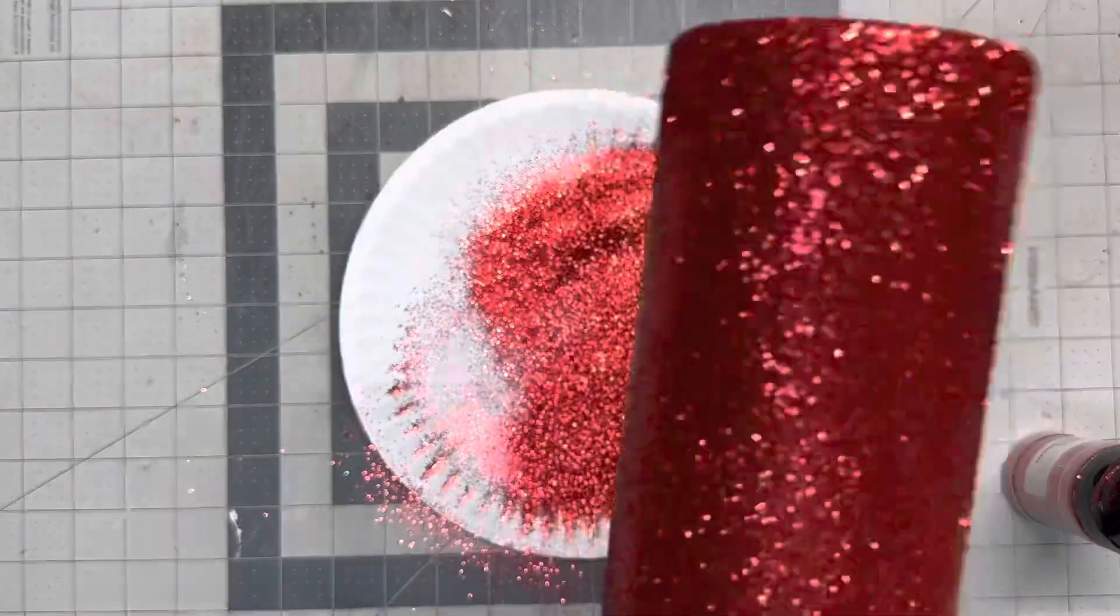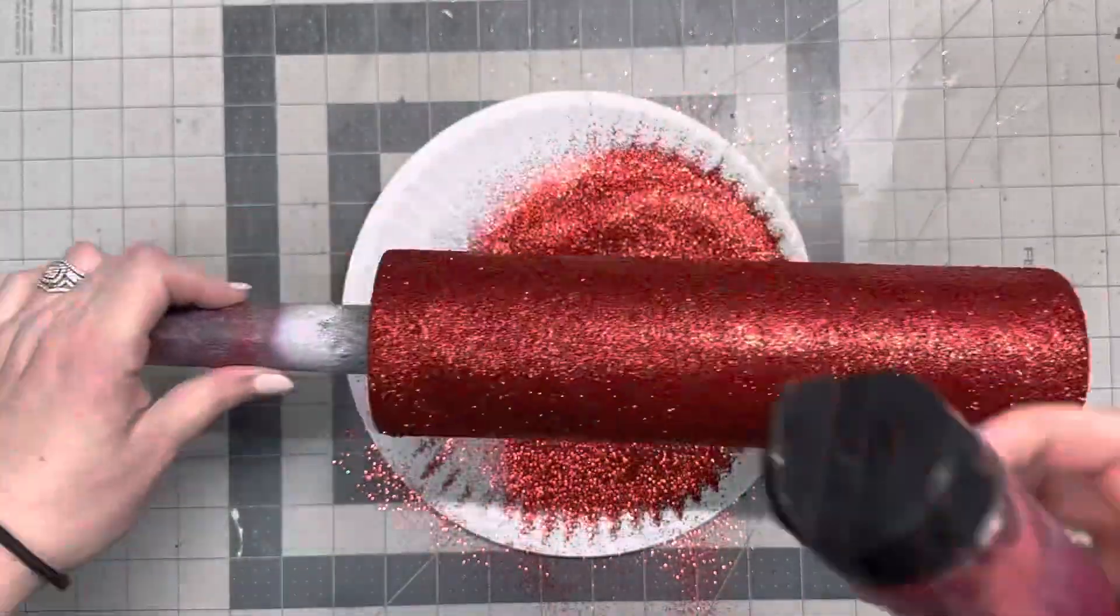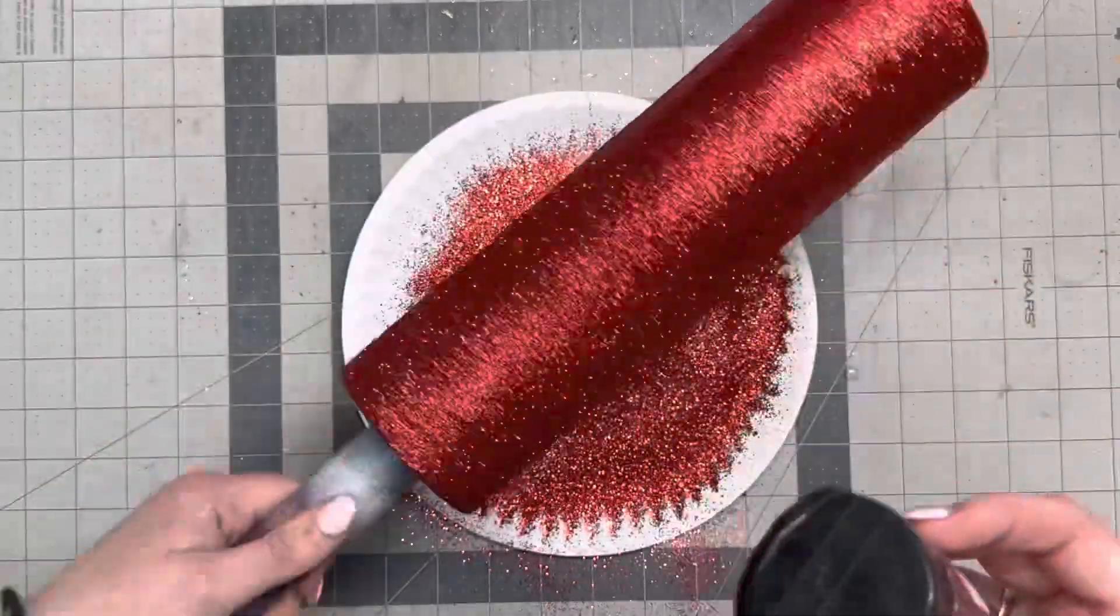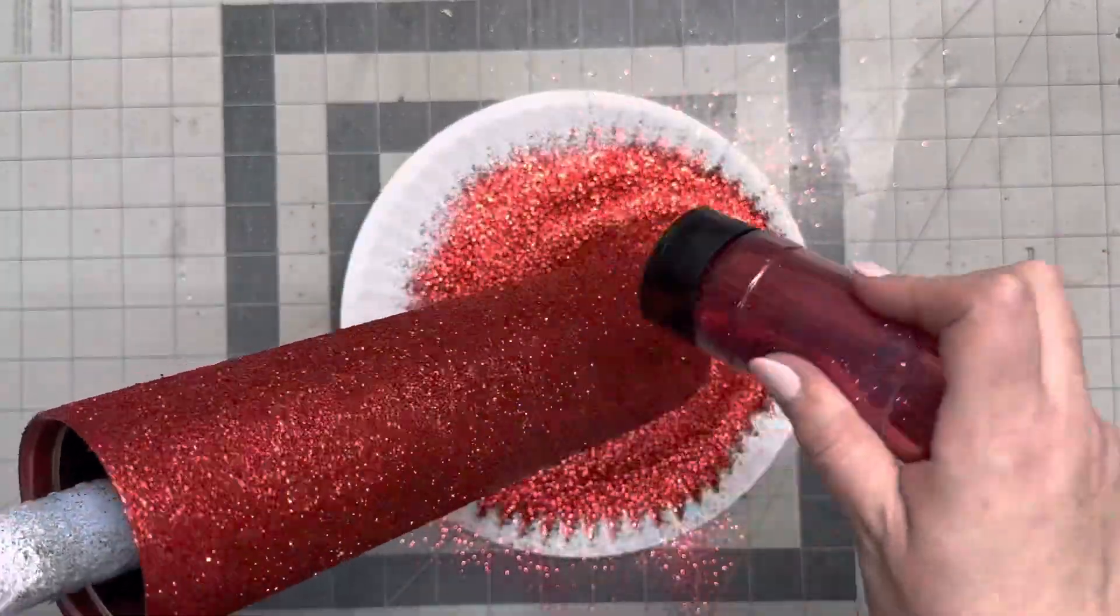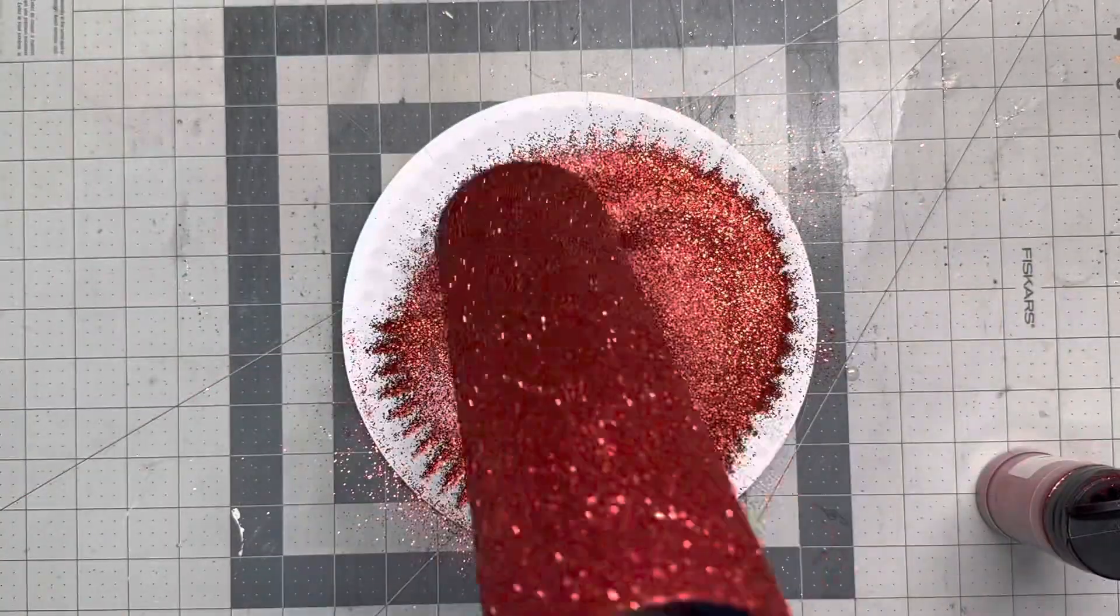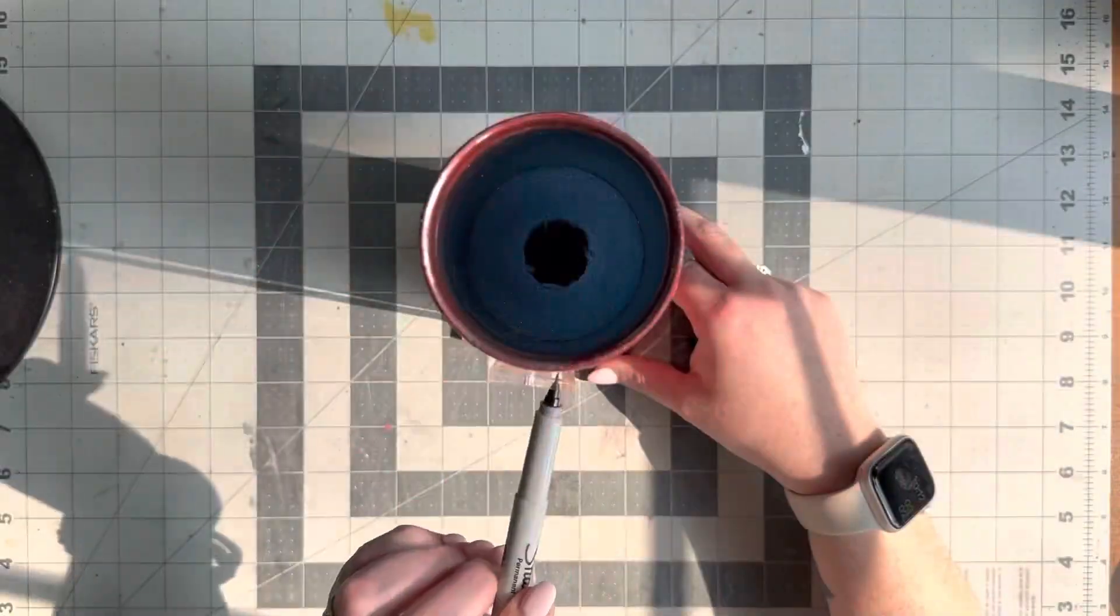So here we are. I'm gonna start out with a prepped and spray painted base and this is a 32 ounce from the Steel Magnolia which is now Tipsy Magnolia. I wanted to use this one because it was a lot taller than the rest of them.